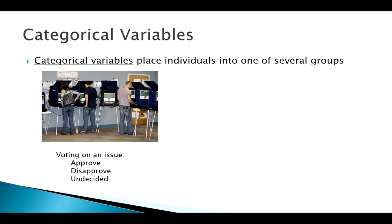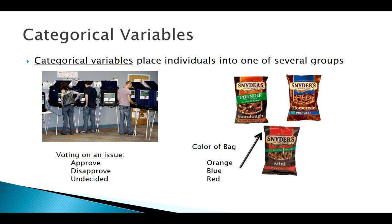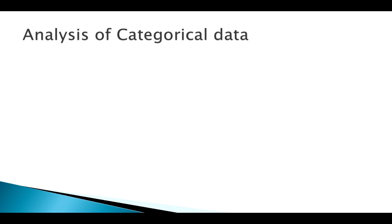So something like if you're voting on an issue, the approval rating of the president, something like that. Or instead of, we've looked at before the weights of bags of pretzels, what about like the color of the bags of pretzels? So how do we analyze data like this?